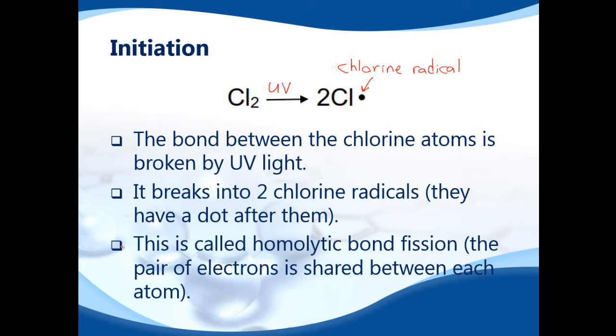It's called homolytic bond fission. The bond between two chlorine atoms is a shared pair of electrons. In homolytic bond fission, each of the atoms gets one of those electrons, so they form chlorine radicals.